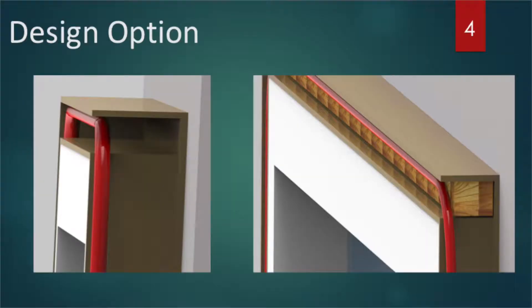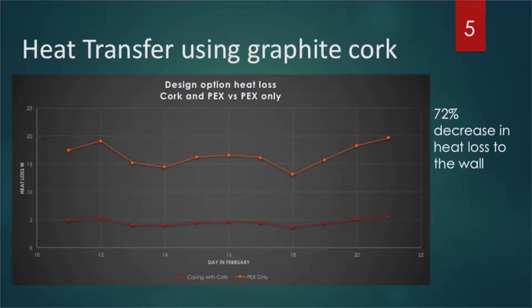The figure to the left illustrates the current design. To the right, we have added cork insulation to direct the heat to the window frame, to further increase the overall temperature of the window and increase thermal comfort. Adding cork to the space decreases the heat loss to the wall by 72 percent.